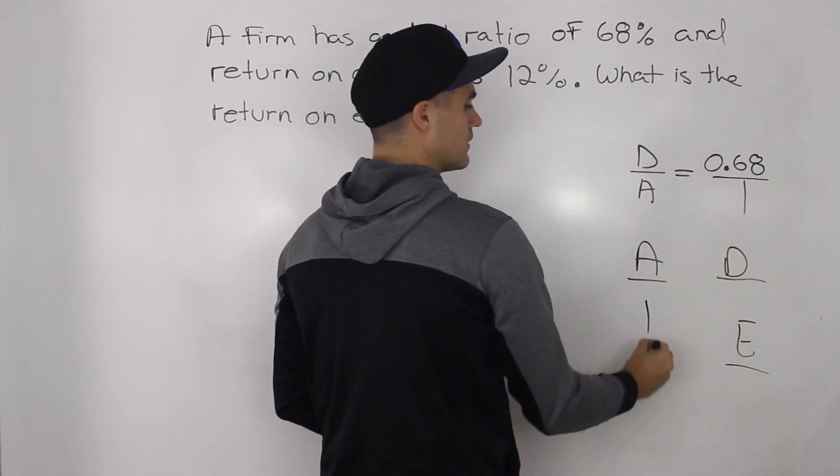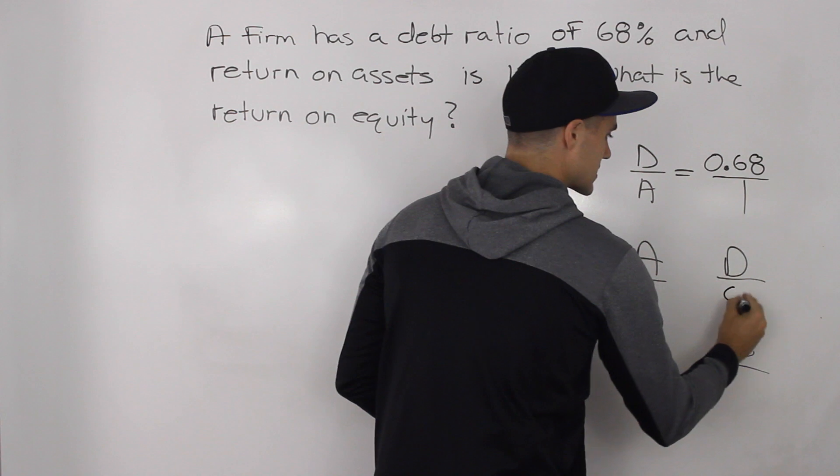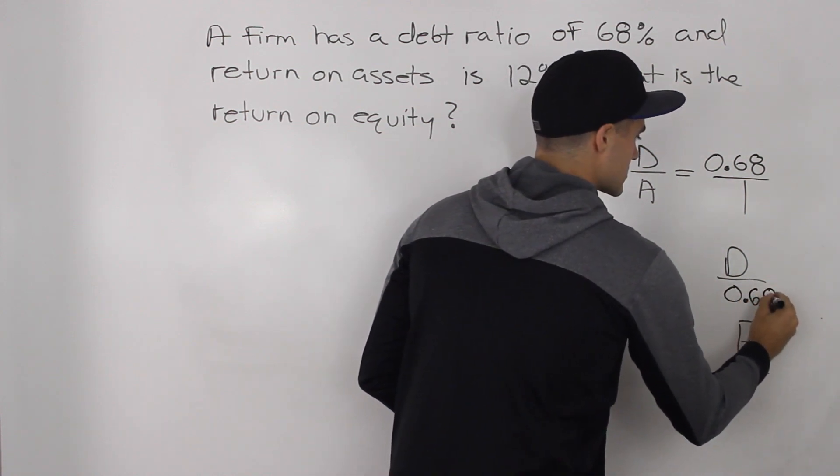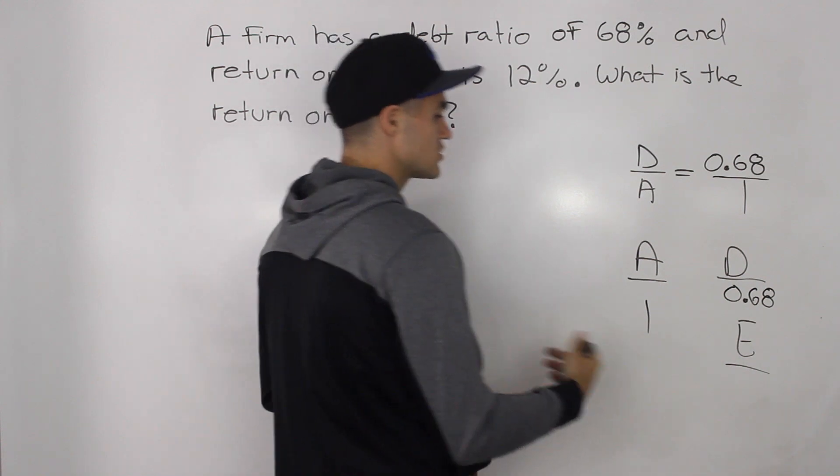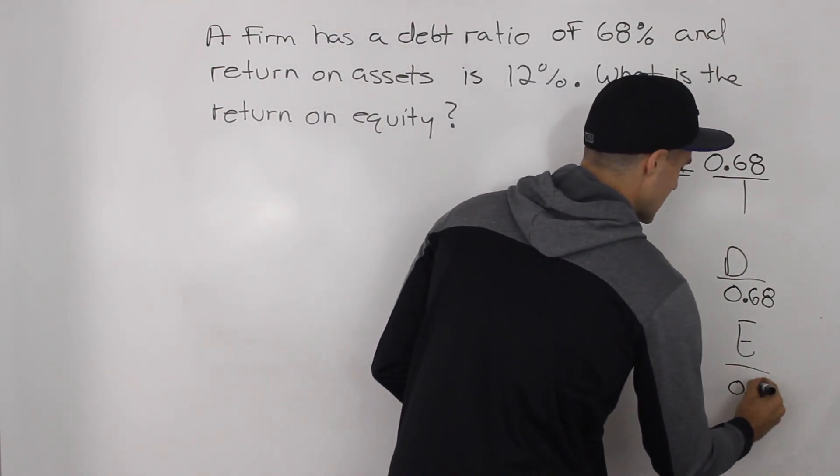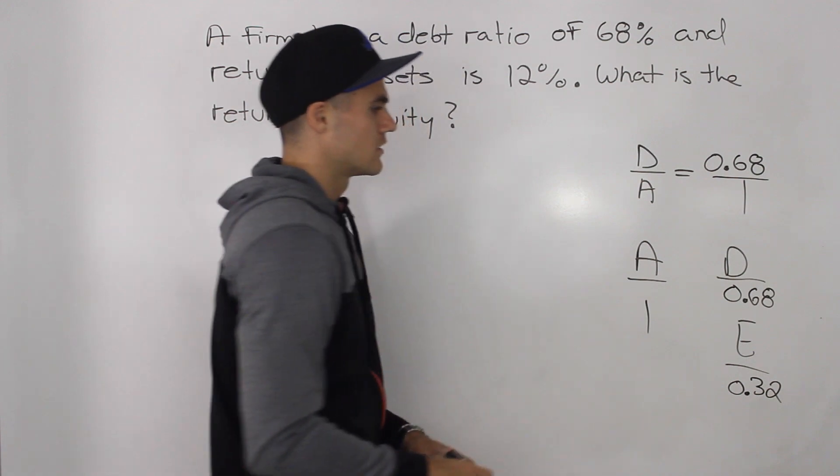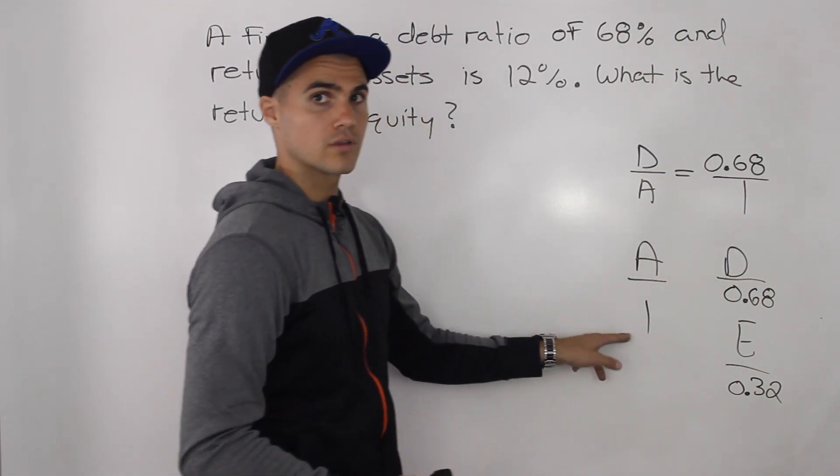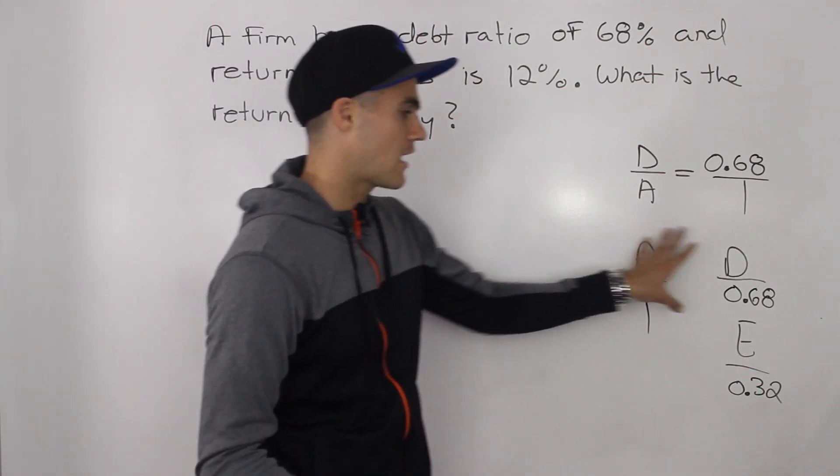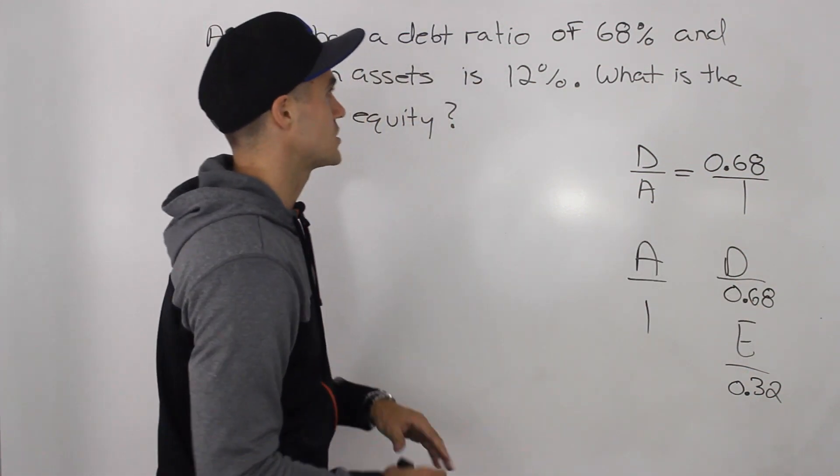the debt we know is 0.68. So then one minus 0.68, that gives us 0.32, which is the equity. So notice how they balance 0.68 plus 0.32 gives us one. So now we have our mini balance sheet.